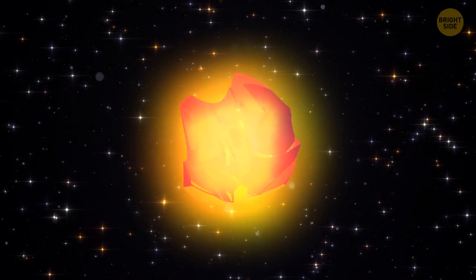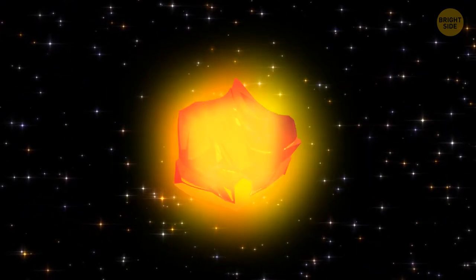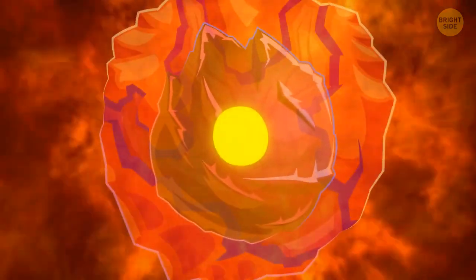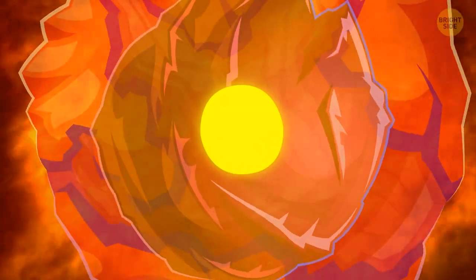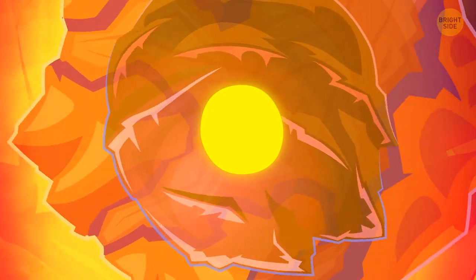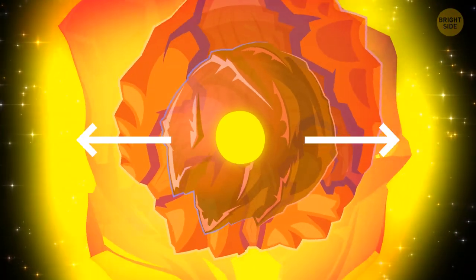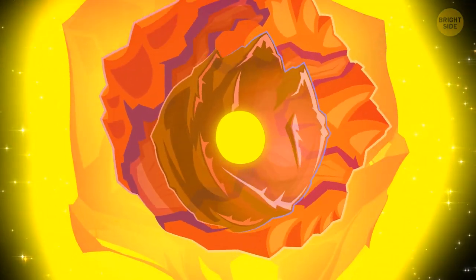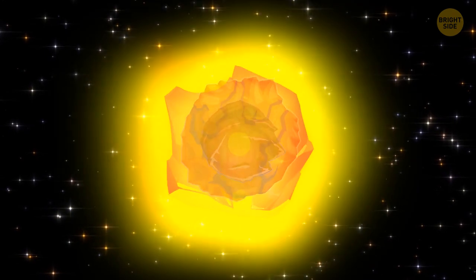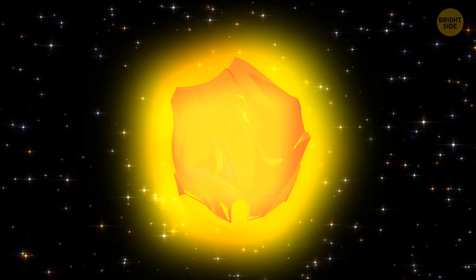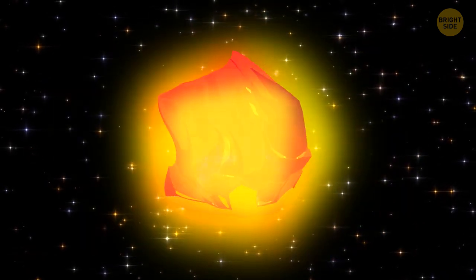At first, Betelgeuse was very massive and hot. But it didn't expand and remained stable. Let's look into its heart. The nuclear reactions in the star's core create a lot of heat and energy. This energy produces the force that pushes on the walls of the star from the inside and causes it to expand. But at the same time, the star is very heavy. That's why gravity pushes on it from the outside. If these two forces are balanced, the star remains stable.